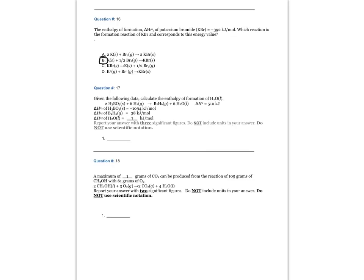Question number 17: Given the following data, calculate the enthalpy of formation of liquid water. The reaction when you have two moles of H3BO3 solid plus six moles of hydrogen gas react to make one mole of B2H6 gas plus six moles of liquid water. The enthalpy of that reaction is 510 kilojoules. Report your answer with three significant figures. Do not include units in your answer. Do not use scientific notation.